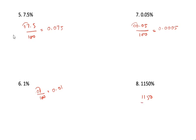1150 divided by 100. The trailing 0 cancels, leaving 115 divided by 10. That gives 11.5. So the answer is 11.5.